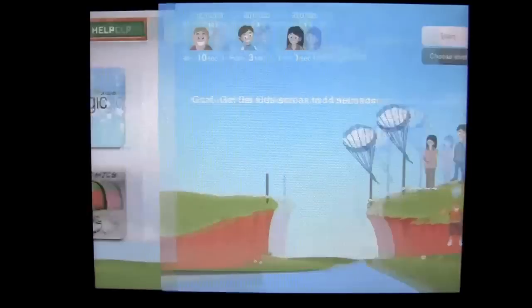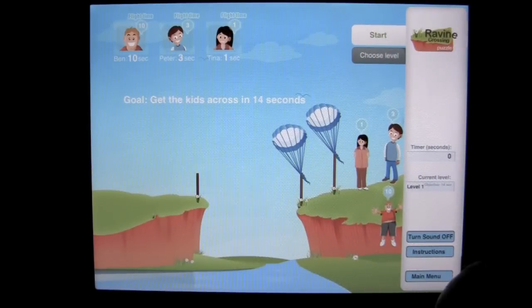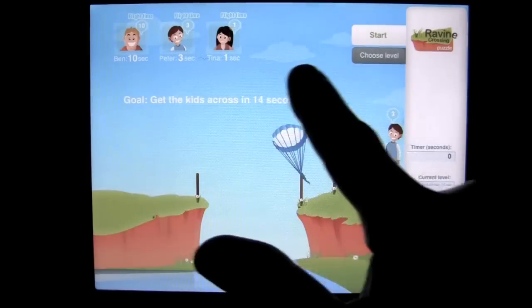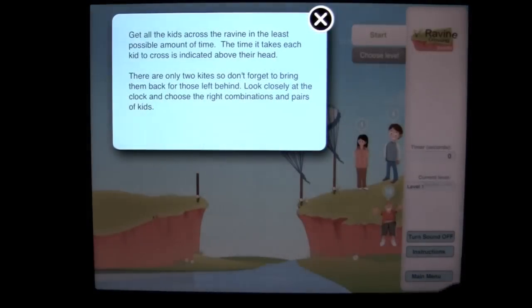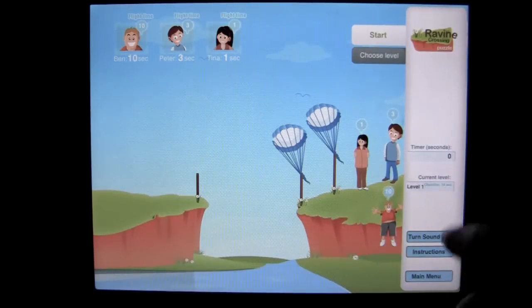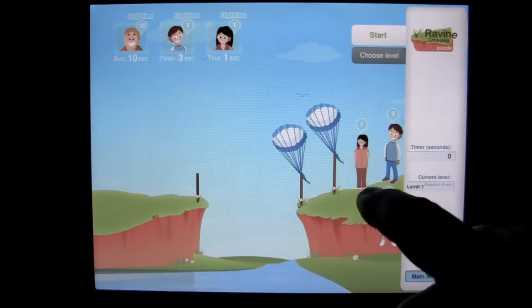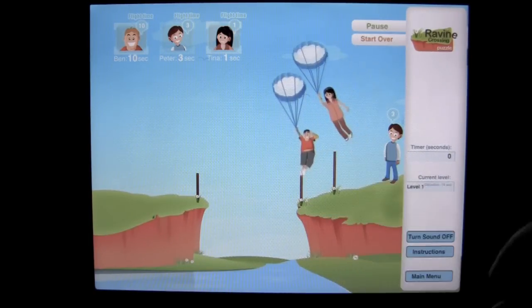We can go back to the main menu. We can look at the ravine, which is another one of my favorite games. Here you have to figure out how to get the kids across the ravine using the time that you have. Tap on the instructions if you're not clear, but I'll basically explain it to you. The number over the child's head is how much time it's going to take them to get over. So you match the child up with the parachute.